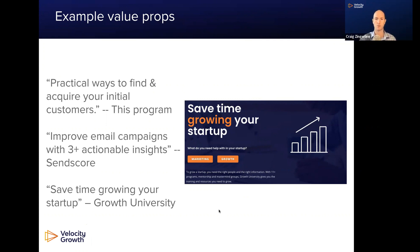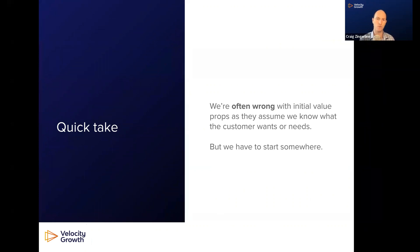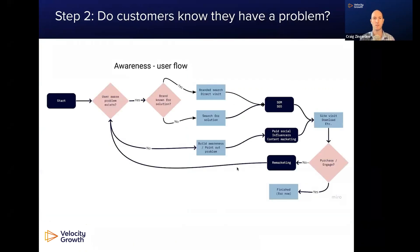I'll walk you through how to think about this and how to model this out. As I just mentioned, we went through many different iterations on value prop. We're often wrong with our initial value prop — we have assumptions on what we think the customer wants and needs, but we often don't actually know that. We can't prove it yet because we don't have any customers. But we have to start somewhere, so don't agonize over it if you just don't know what the true value you're going to bring to the table is.